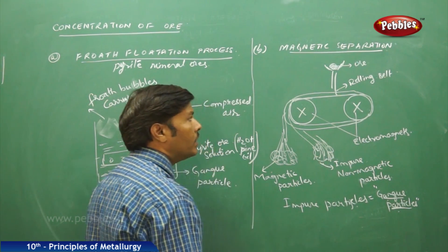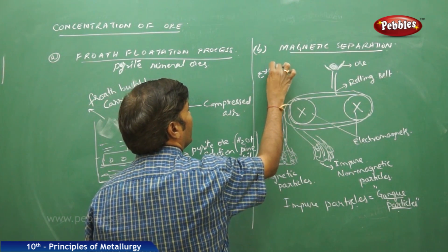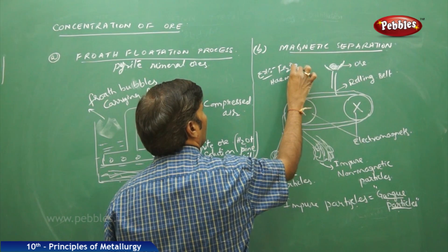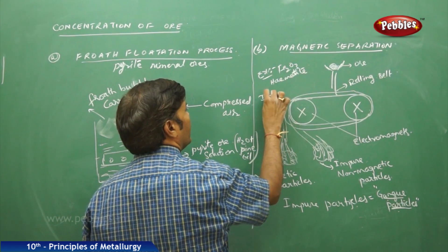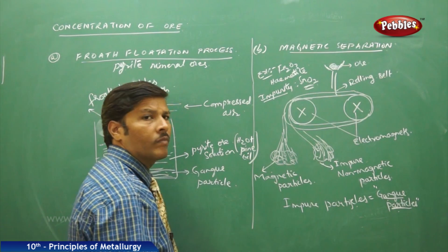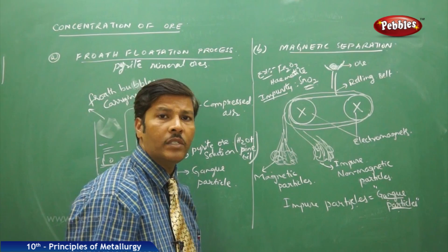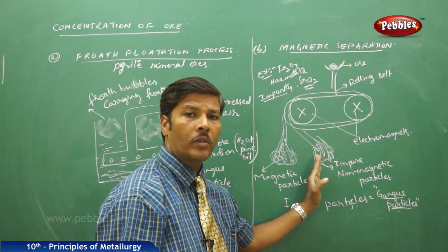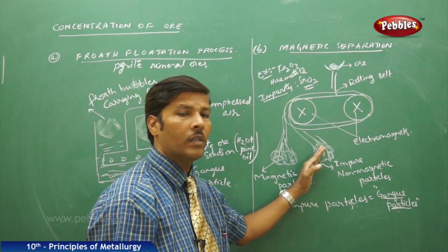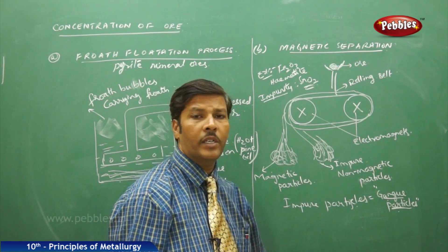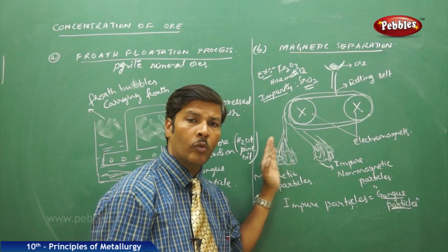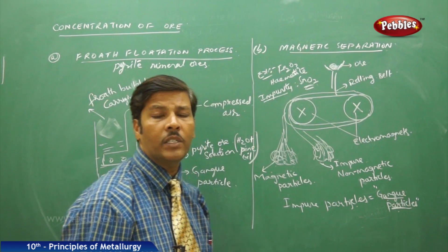A best example of non-magnetic impurities is Fe₂O₃ hematite, which contains the impurity tin stone, SnO₂. These small tin dioxide particles act as impurities and separate out from the oxides of iron, forming a separate heap. Because of the difference in magnetic and non-magnetic nature of the ore and impure particles, they are separated into distinct heaps. This is how we successfully separate the ore particles from the impurities in electromagnetic separation. These two methods — froth flotation and magnetic separation — are very important.